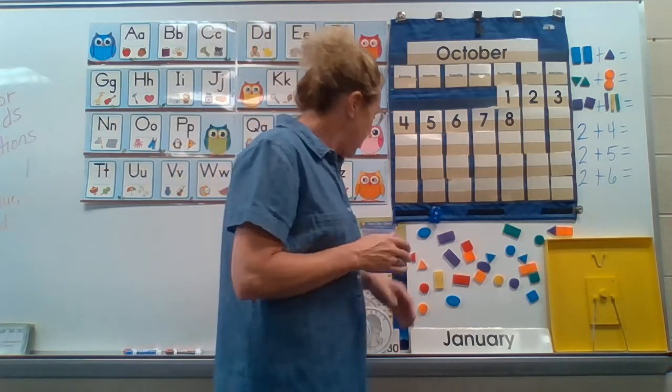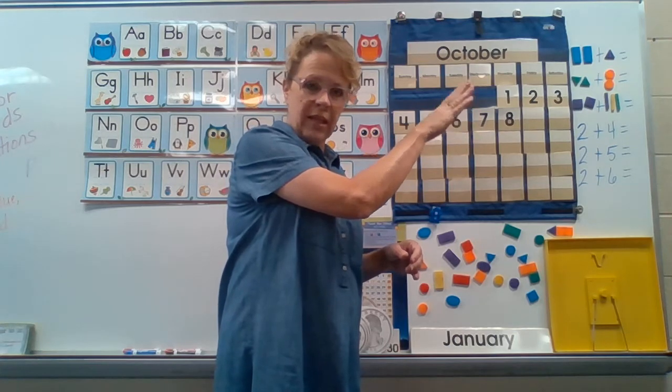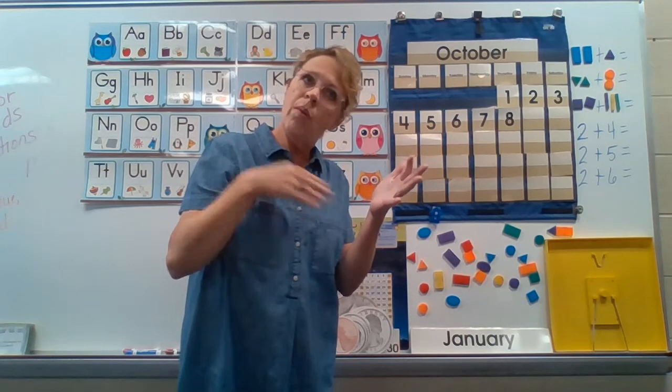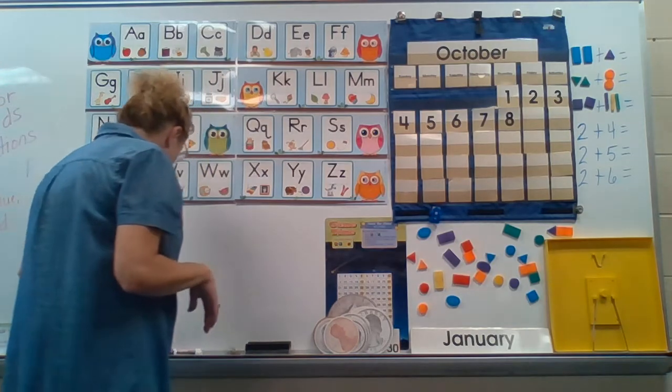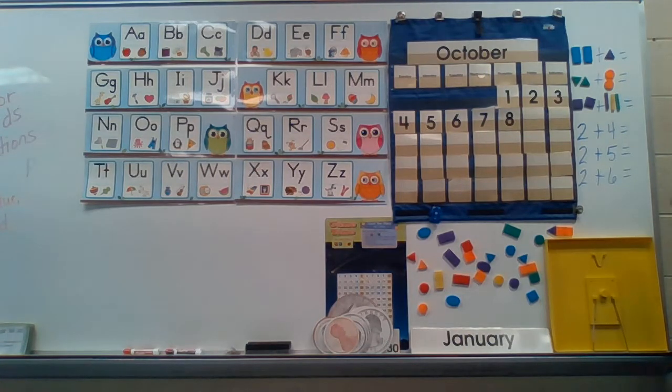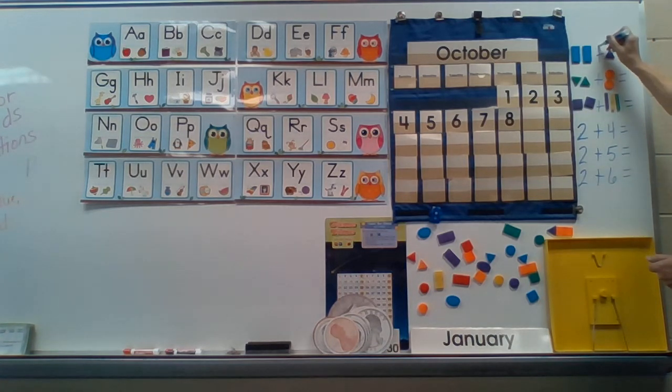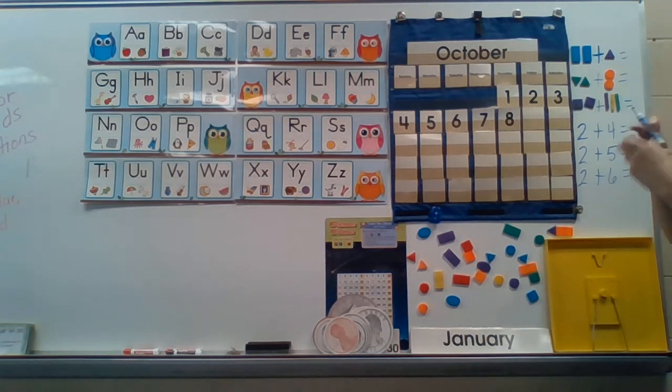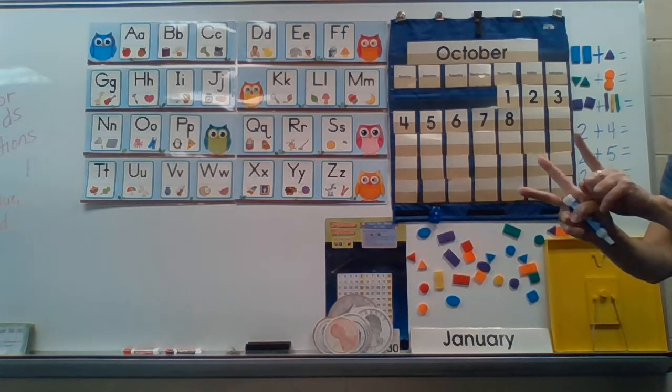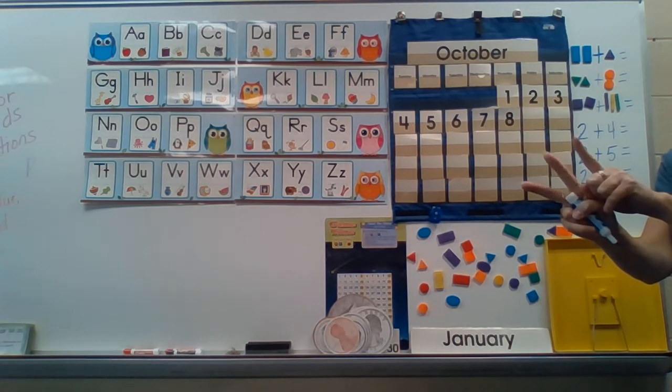Now, I've got some equations or number sentences up here again today. And this time, I started my equations with the number two. And we'll have two and we'll add more and see what we get. All right. We're going to start with two and add some more. So, my first number sentence says, two rectangles plus, this mark right here is a plus. That means you put things together if it's a plus. You're going to put them together. All right. So, two rectangles plus one triangle. So, how many would we have all together? Two rectangles and one triangle. One, two, three.